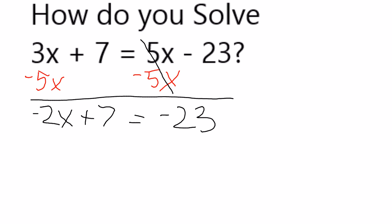To get x by itself, I want to take away the plus 7, which I do by subtracting 7 on both sides. And that's going to give me negative 2x. The 7's cancel is equal to negative 23 minus 7, which is negative 30.